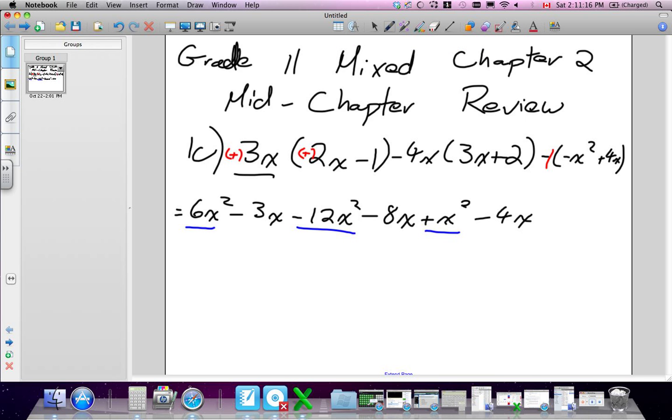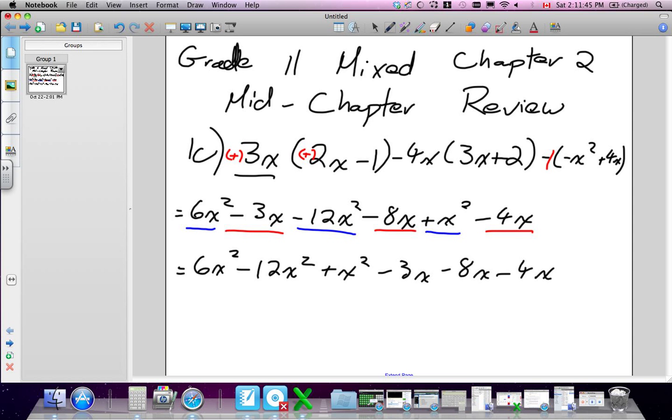Next, simply collect our like terms. So here's our x squared terms. So I'm going to move them all together. This would be 6x squared. Now when I move this, what comes with it? The negative sign. So it becomes subtract 12x squared plus x squared. I'm going to end up with only 2 terms in the end here because these are all like terms.